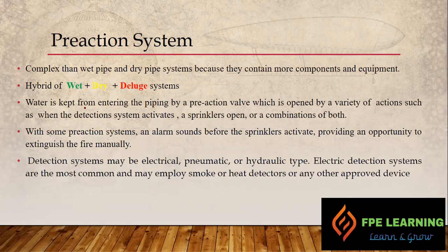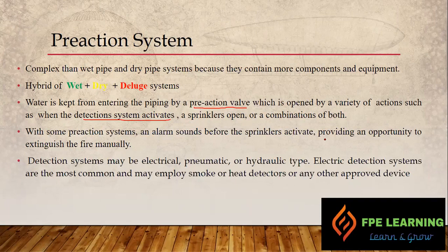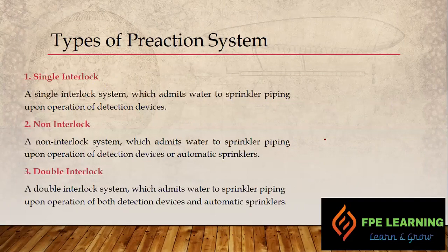With the pre-action system, water is kept from entering the piping by a pre-action valve, which is opened by a variety of actions — such as a detection system activating, a sprinkler opening, or a combination of both. Types of interlocks may be single interlock, double interlock, or non-interlock. An alarm sounds before the sprinkler activates, providing an opportunity to extinguish the fire manually. Detection systems may be electrical, pneumatic, or hydraulic; electrical detection is the most common and may employ smoke or heat detectors or other approved devices.